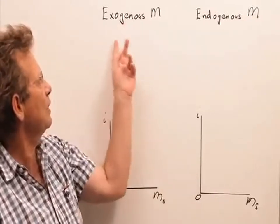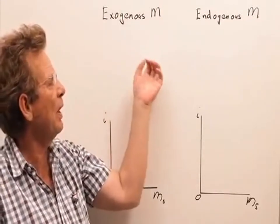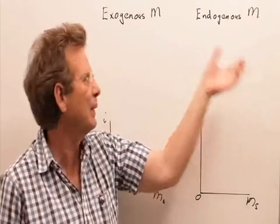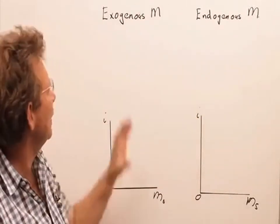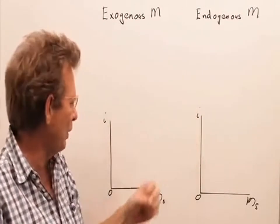Let's look at the difference between an exogenous money supply and an endogenous money supply. Now, let's begin with exogenous. That means determined outside the model.